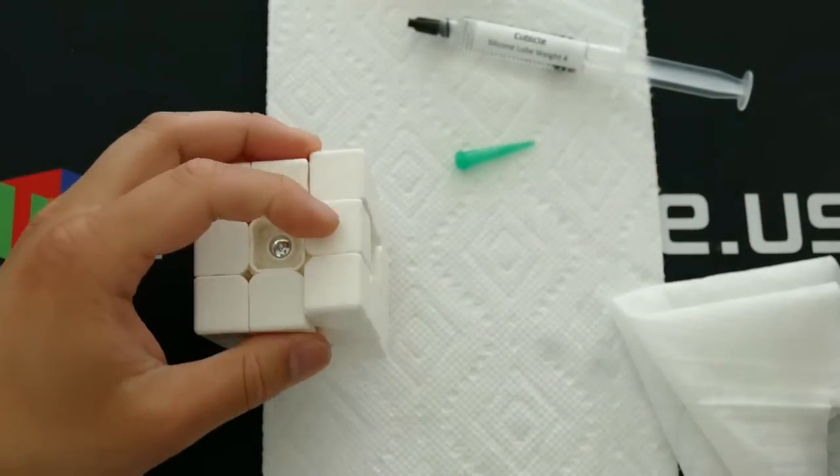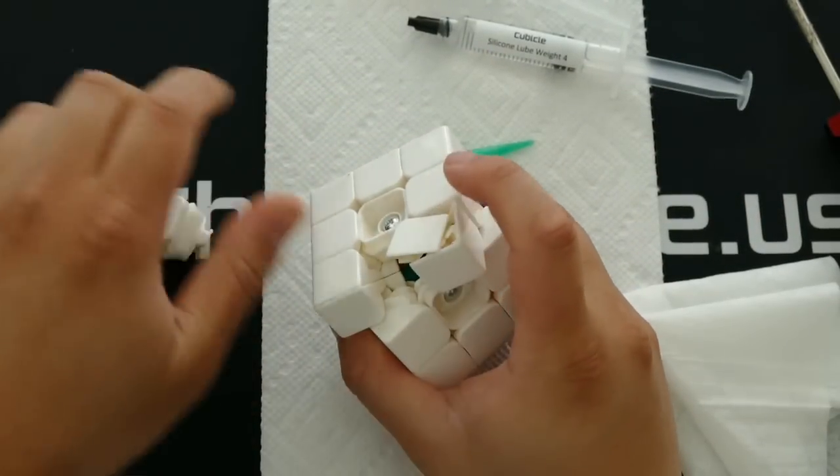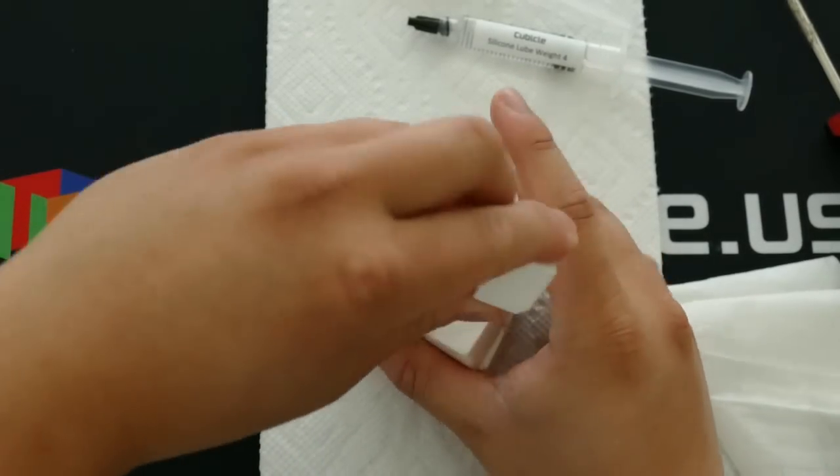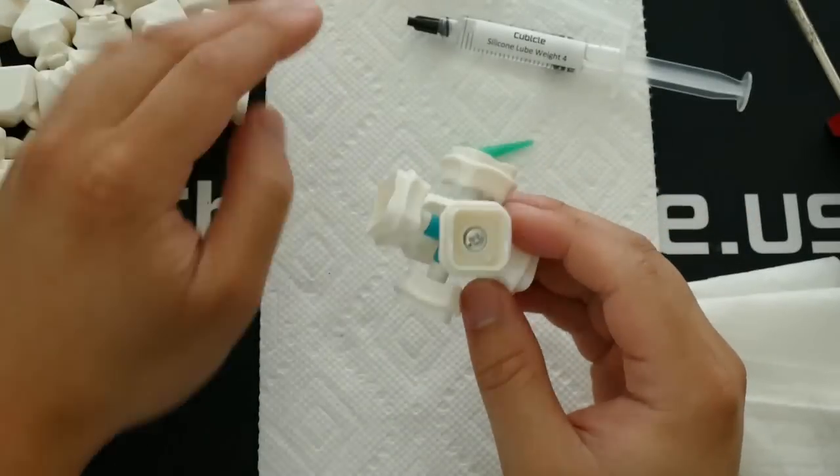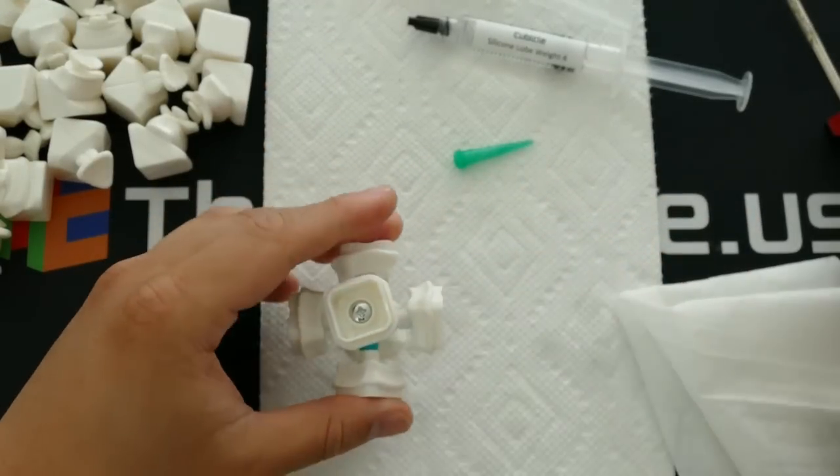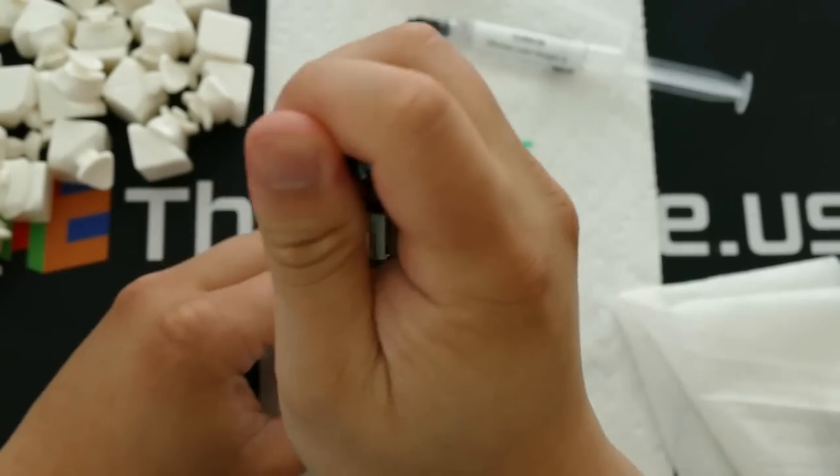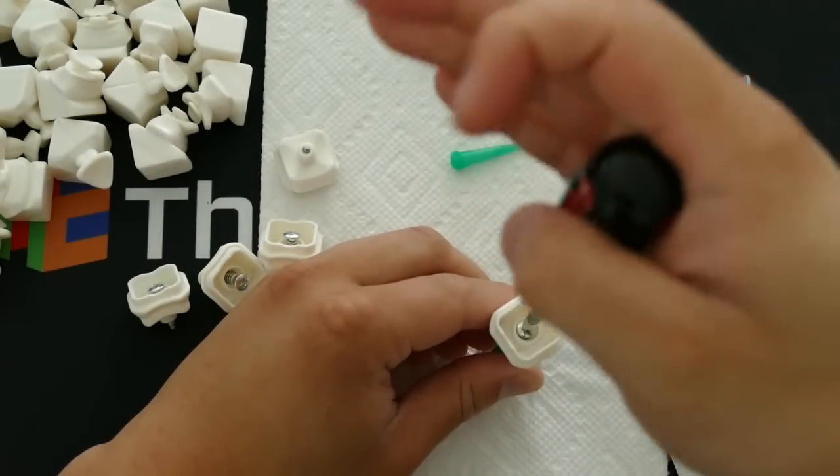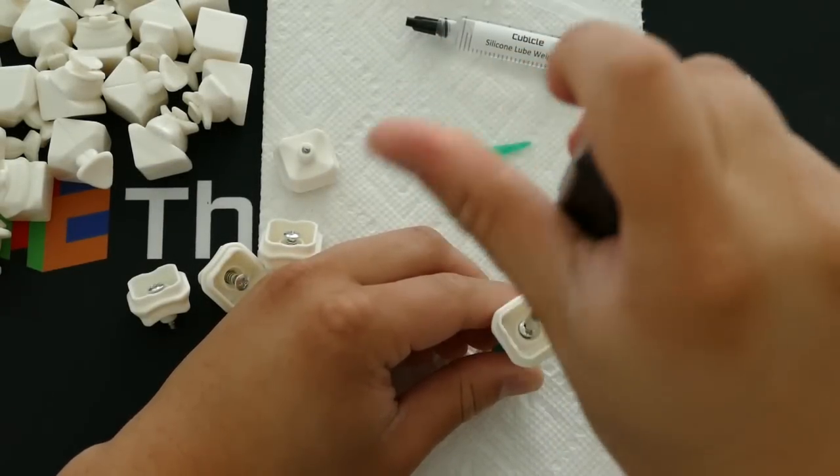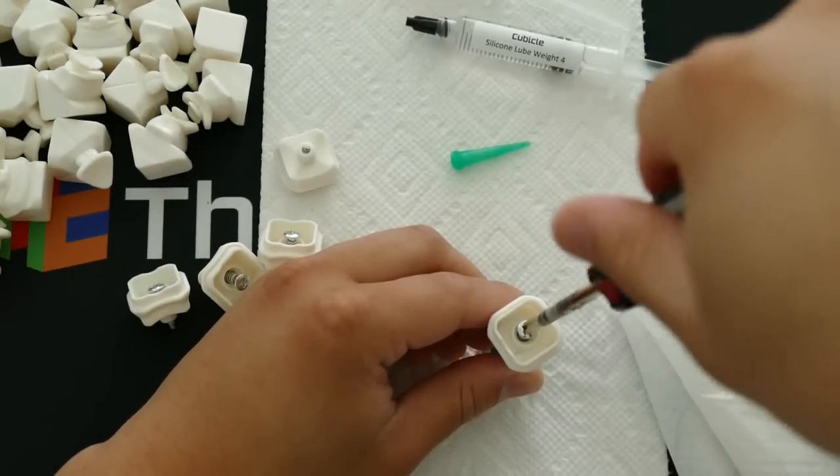Essentially what this video will consist of is me walking you through how I personally lube 3x3s. So what I'll do is I'll cut to the end of the disassembly. So now we have a bare core and what I'll be doing is I'll be unscrewing five of the center pieces. So what I'll be doing here is skipping to the part where I actually disassemble everything and explain why I disassemble only five of them.